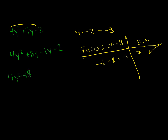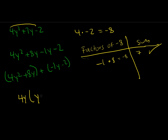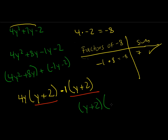We rewrite the expression as 4y squared plus 8y minus 1y minus 2, then group the first two and last two terms. For the first group, the greatest common factor is 4y, so pulling that out leaves y plus 2. For the second group, we pull out a negative 1, which gives us y plus 2. We can see the common factor y plus 2 on both terms, so pulling that out gives us (y plus 2)(4y minus 1) as the final factorization.